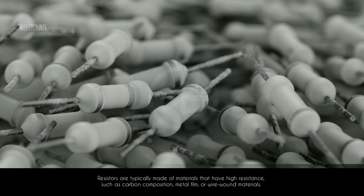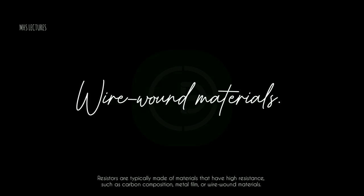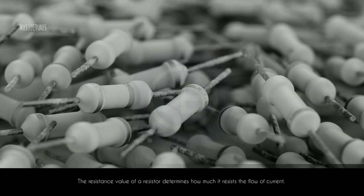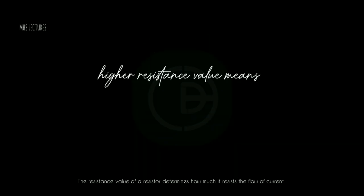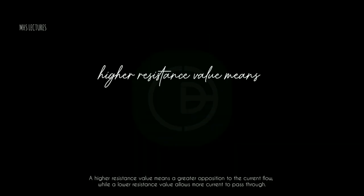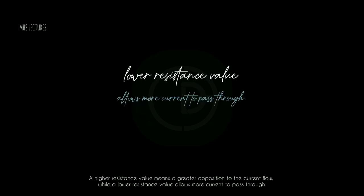Resistors are typically made of materials that have high resistance, such as carbon composition, metal film, or wire-wound materials. The resistance value of a resistor determines how much it resists the flow of current. A higher resistance value means a greater opposition to the current flow, while a lower resistance value allows more current to pass through.